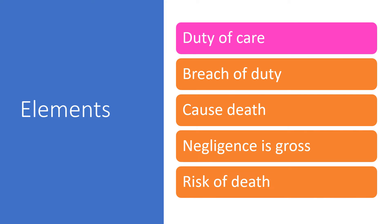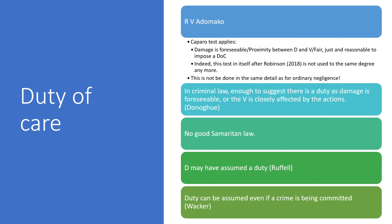For duty of care, most principles from civil negligence apply. The Caparo test still roughly applies — damage must be foreseeable, there must be proximity between defendant and victim, and it must be fair, just, and reasonable to impose a duty. However, after Robinson, if there is an established duty, that is sufficient. In criminal law, it is enough to show damage is foreseeable or the victim is closely affected by the defendant's actions, as outlined in Donoghue. There is no good Samaritan law in either criminal or civil law.